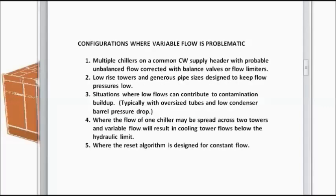Now here is a list where variable flow is problematic with the following configurations and situations. Number one is where you've got multiple chillers on a common condenser water supply header, and it is necessary to balance the flow to each chiller with valves or flow limiters.